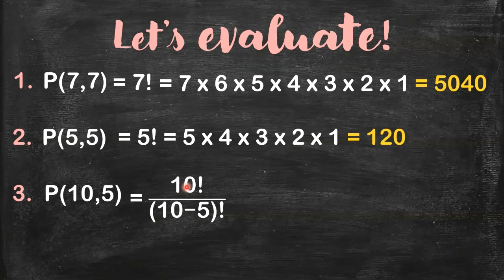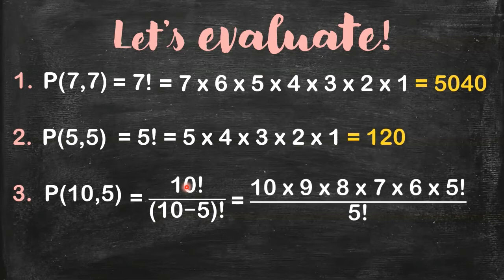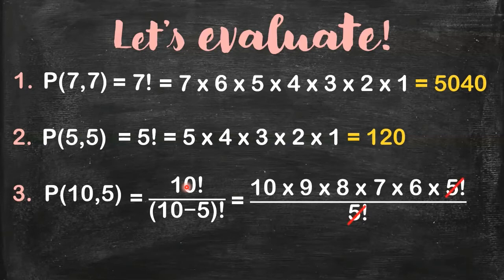I discussed this in my video about factorial notation. So you'll see here, why we need to stop at 5 factorial - so they can cancel out. And then all you have to do is to get the product of 10, 9, 8, 7, and 6. And you will get 30,240.